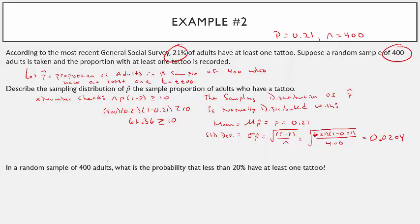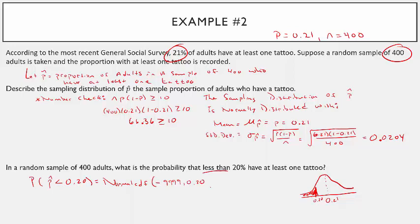In a random sample of 400 adults, what is the probability that less than 20% have at least one tattoo? That's the probability that p-hat is less than 0.20. Shade the curve — centered at the mean 0.21 — to the left of 0.20. This is a left-tail problem using normal CDF: lower is negative 9999, upper is 0.20, mean is 0.21, standard deviation is 0.0204.